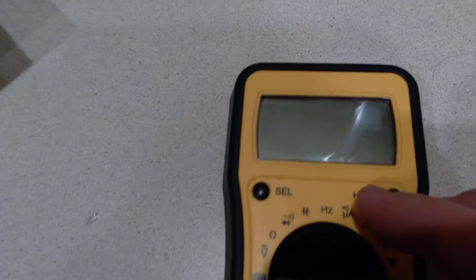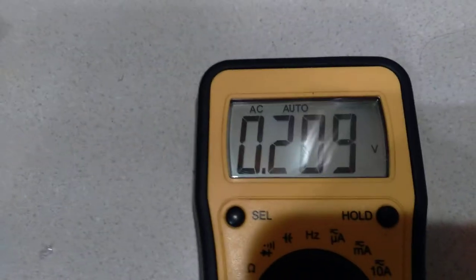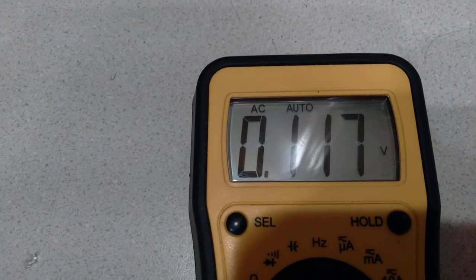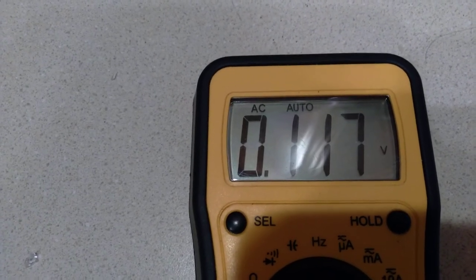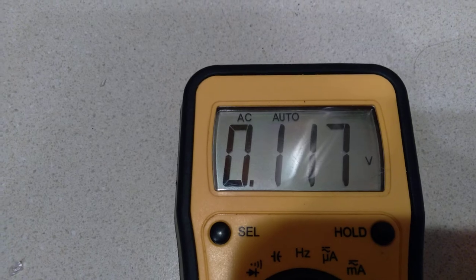So if we turn the multimeter on, we're getting 0.11 volt AC.